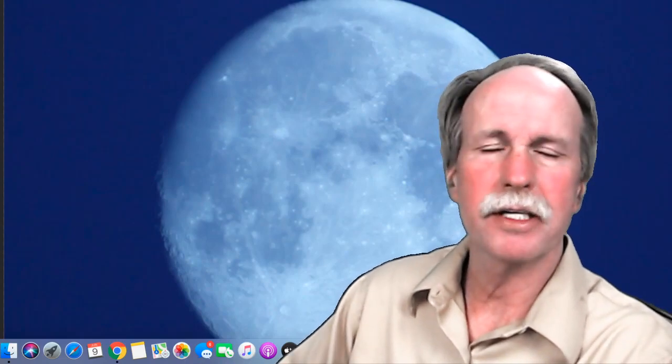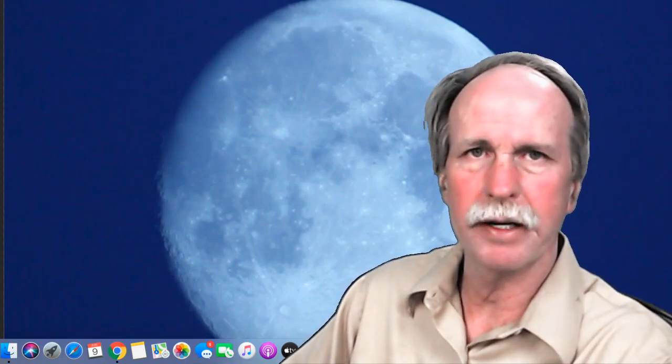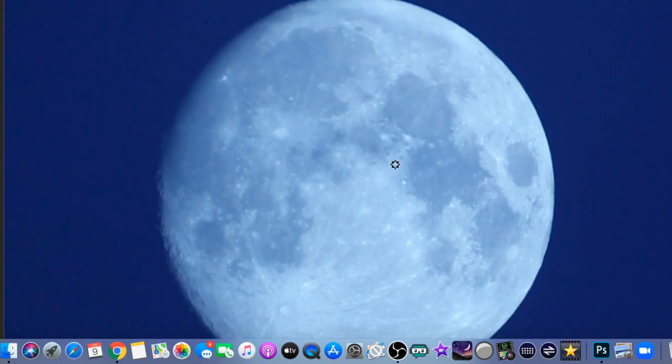Before we get started let's go over something from our last episode and that is the concept of the rabbit in the moon. A lot of people had a little trouble visualizing it so let me point it out for you. If you have a look at the dark areas or the mare or the seas of the moon you can see they form kind of a shape. Traditionally in the west we talk about the man in the moon but in the east they talk about the rabbit in the moon.